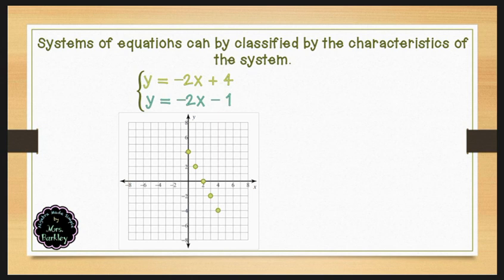Then we look at the second equation of the system, which is y equals negative 2x minus 1. We can see that our slope is negative 2 and our y-intercept is negative 1. We'll plot our point at (0, -1) and with a slope of negative 2, we'll go down 2 and to the right 1, continuing to make points so we have an accurate line.